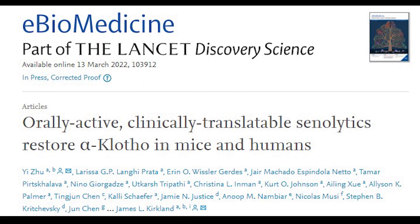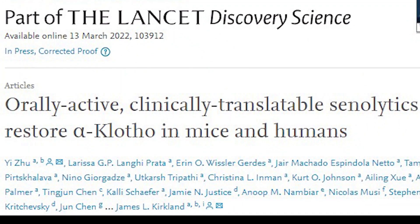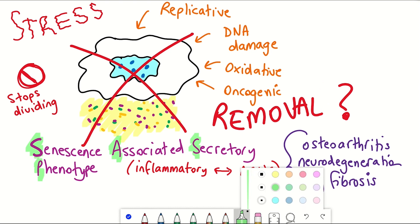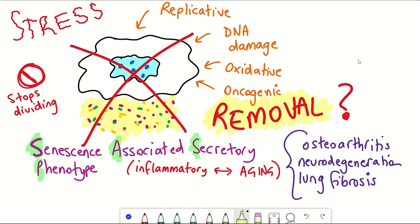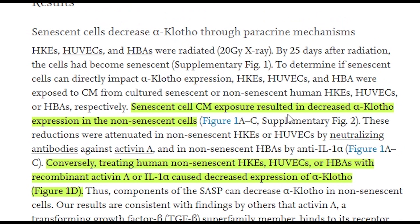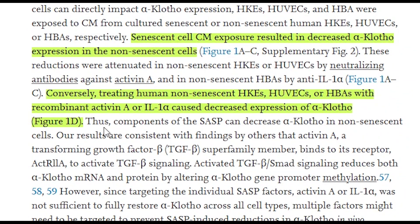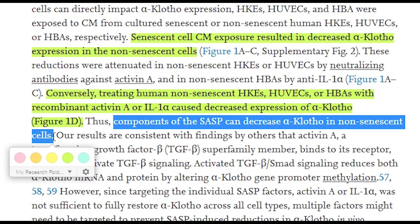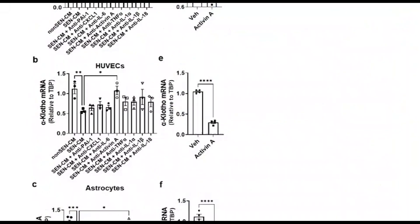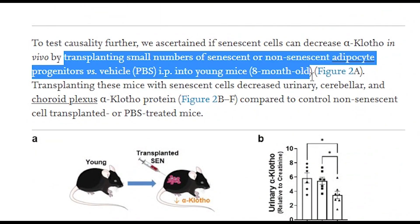This brings me to the latest publication: Orally Active, Clinically Translatable Senolytics Restore Alpha-Clotho in Mice and Humans. The authors took the SASP — the secretory phenotype of senescent cells — and put it on relevant human cell lines: endothelial cells, kidney cells, and brain astrocytes, cells that produce alpha-clotho. They saw the levels decline. A reduction also occurred with just singular components of the SASP, interleukin-1A and activin-A, suggesting these factors are involved in causing the decline in clotho expression. They even transplanted senescent cells into young mice and found it decreased alpha-clotho levels in the brain and urine.